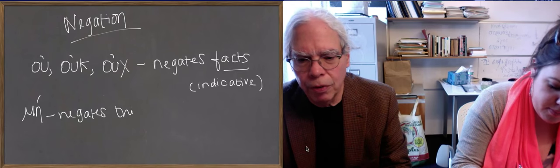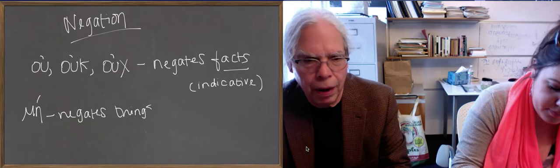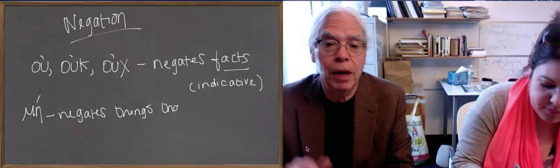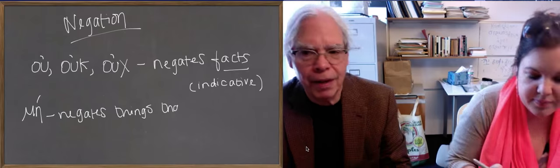So a purpose clause is going to have me as its negative. So we are going home so that we might not buy a bag of peanuts. It's going to have me and not oo. So it helps you know what you're looking at.